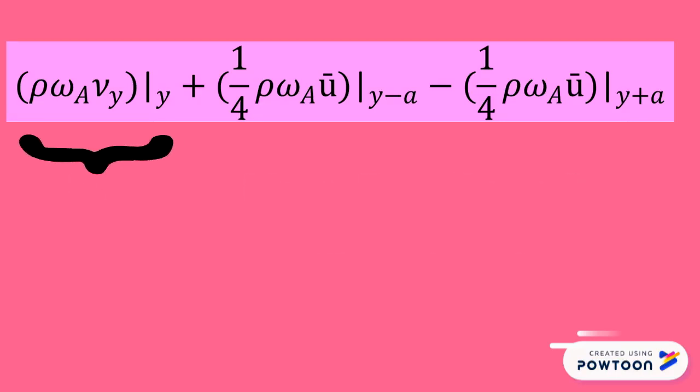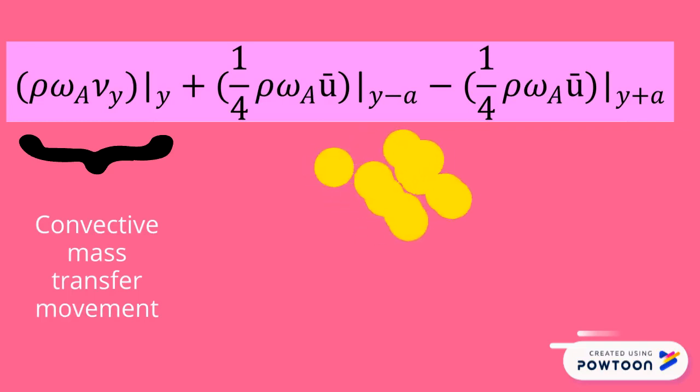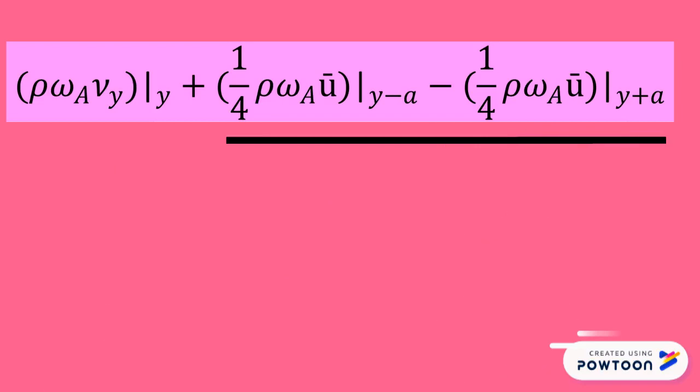The first part of the expression is mass transfer in Y direction due to convective mass transfer movement. Convective mass transfer is bulk mass transfer and is different from molecular movement. The last two terms calculate molecular transport or viscous transport by the virtue of Vy.